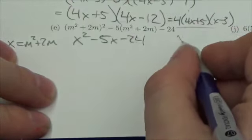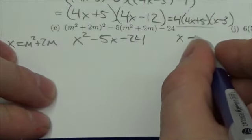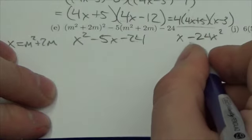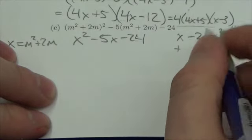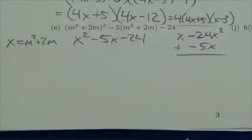So I'm looking for two numbers whose product, or two expressions I should say, whose product is negative 24x squared, and whose sum is going to be negative 5x.